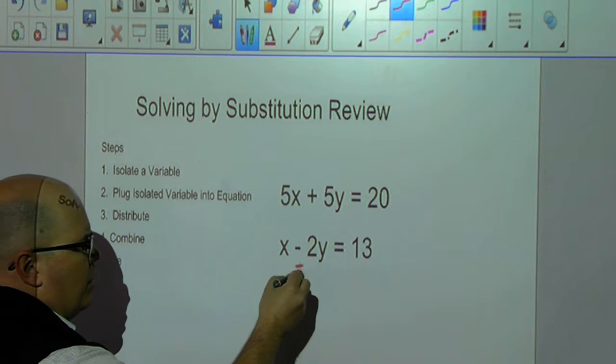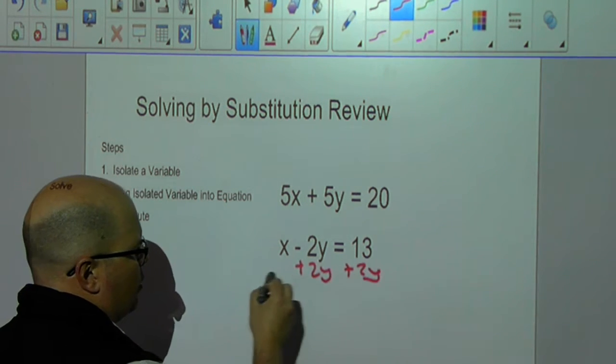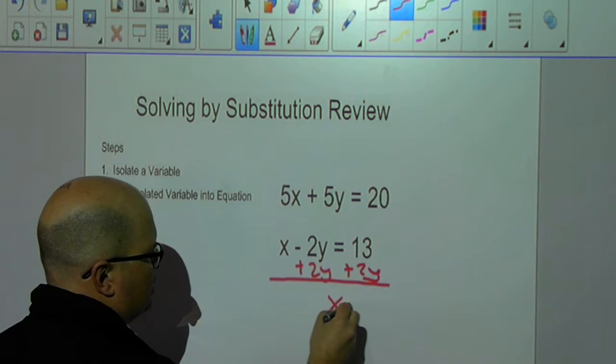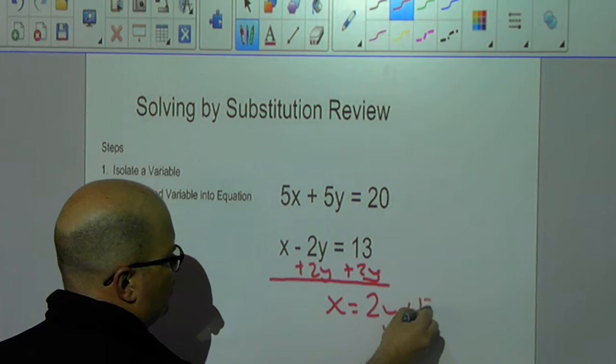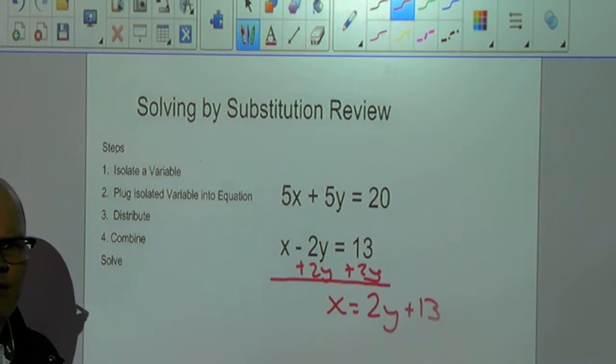And to do that, I'm going to move my y to the other side of the equation. So, I'd have x is equal to 2y plus 13. Now that I have that isolated, I'm going to take whatever is opposite my x and plug it into my x value of the equation.